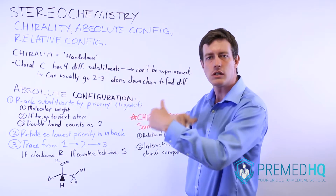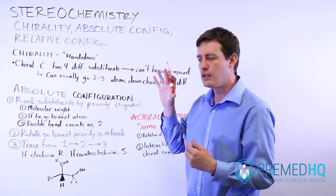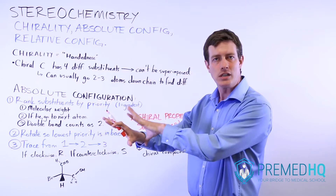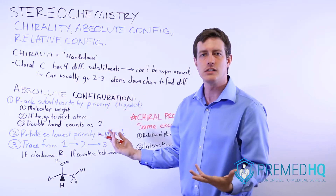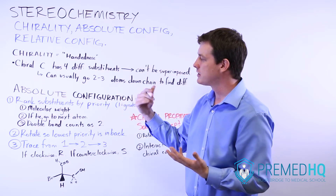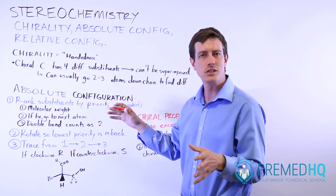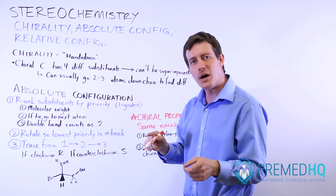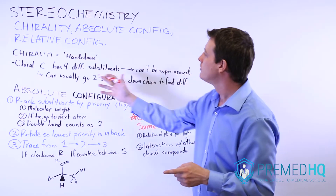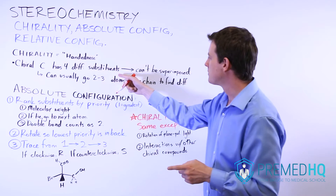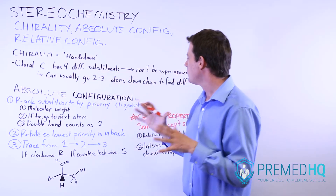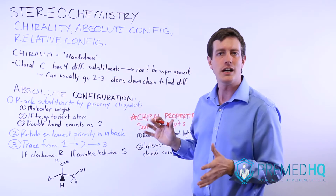There's simply no way that you can rotate the bonds so that one chiral compound has the exact same orientation as its enantiomer, which is basically something that has the same type of atom with the same substituents but a different chirality. For chiral carbons, you need to have four different substituents, and you can usually go two or three atoms down the chain to find that.